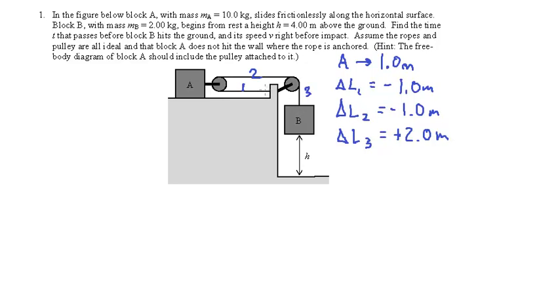So basically what you can say is, if A moves some distance to the right, B moves twice that distance down. That same relationship will translate to velocity and then also to acceleration. So B's acceleration will actually be twice the magnitude of A's.